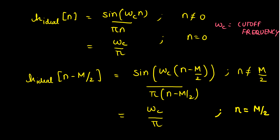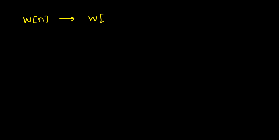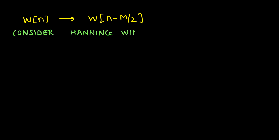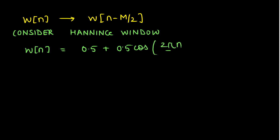Now we have delayed the ideal low-pass filter. The second thing we need to find is the delayed version of the window function. The window function W of n is also to be delayed — that is, we want W of n minus M by 2. Let us consider the example of the Hanning window. The expression for the Hanning window is W of n equals 0.5 plus 0.5 times cosine of 2 pi n upon M.